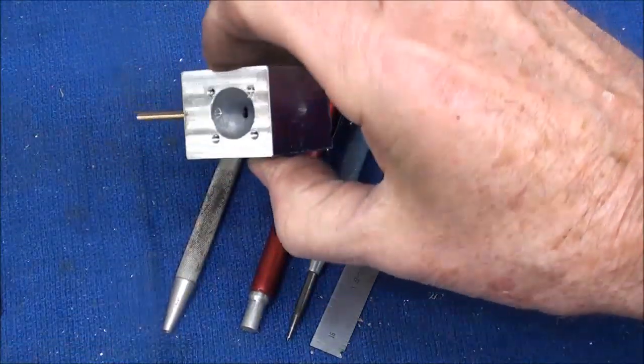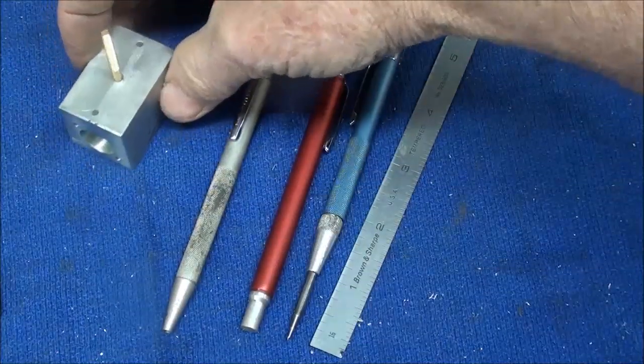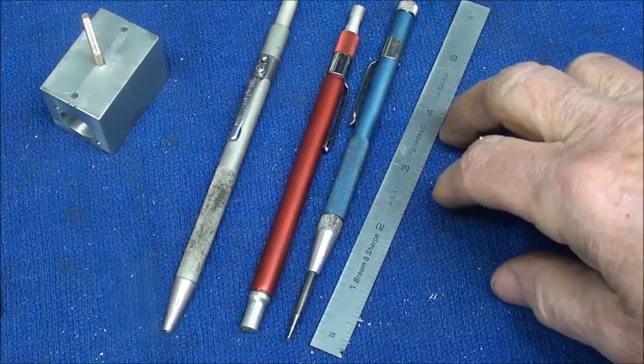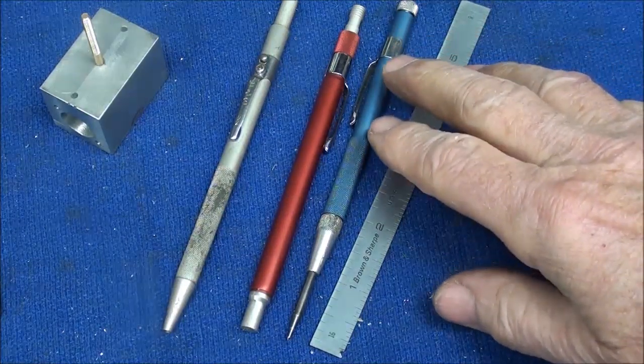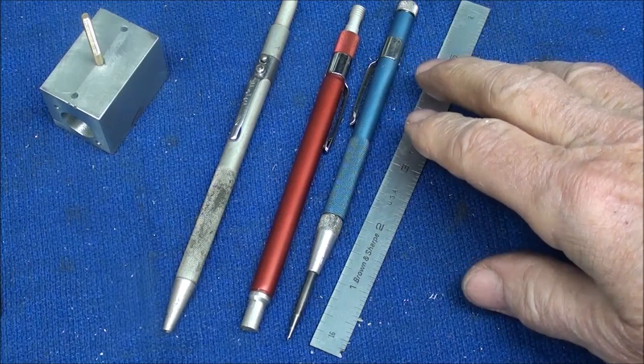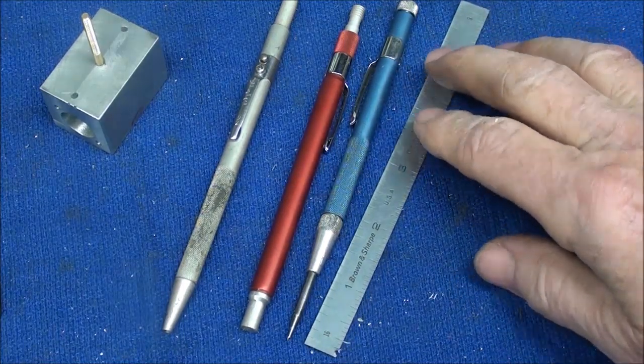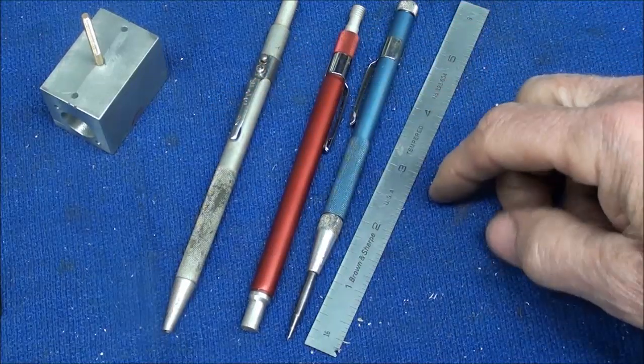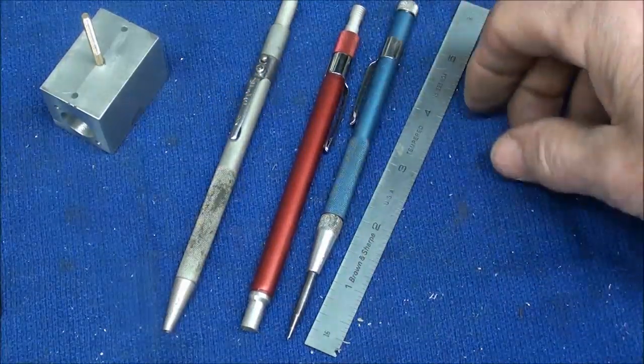These holes are drilled 3/16ths. I need to deburr on the inside but time for a short story. Back when I was in my prime and still teaching, I carried in my pocket - I must have been a nerd, maybe still am, probably I am - I had a pocket protector that said Brown and Sharp on it. I always carried these four tools with me because I was doing a lot of layout for all those years.